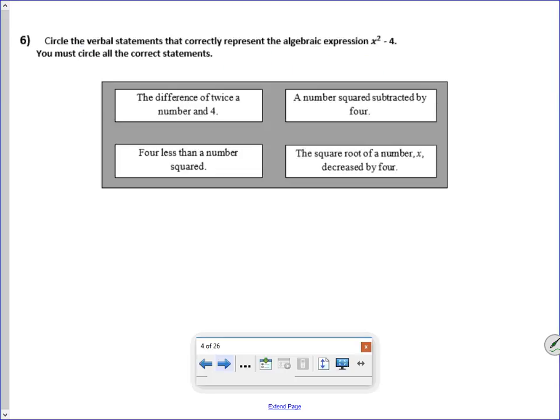All right, so this is representing a technology enhanced question that you might see on the SOL. Circle the statements that correctly represent the algebraic expression x squared minus 4. And this is the key, on these type of problems, when you see them in this format, you must circle all the correct statements. So the difference of twice a number in 4, well that's 2n minus 4. So that's not one.